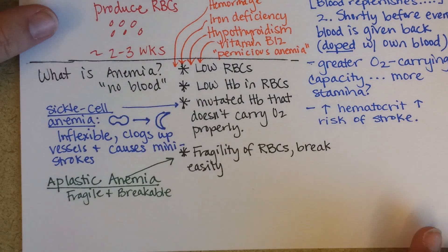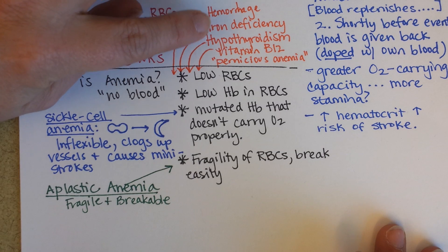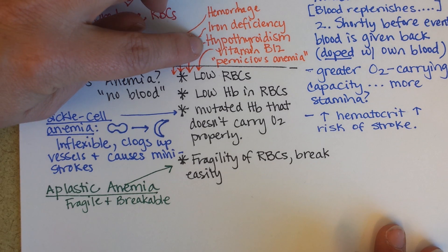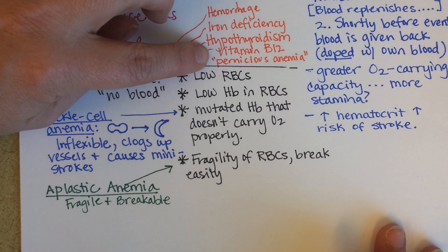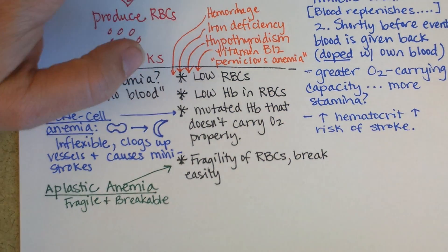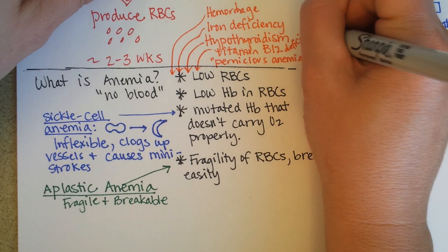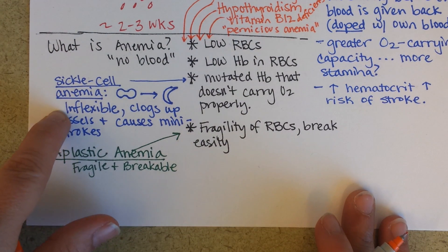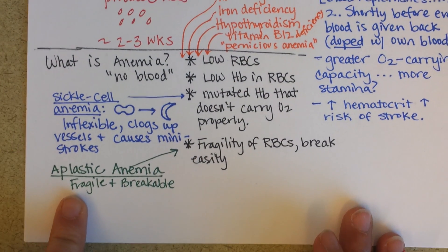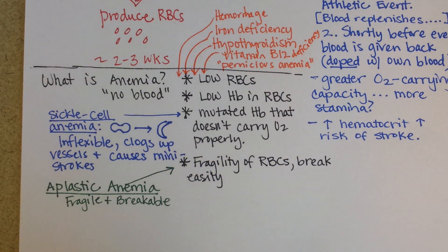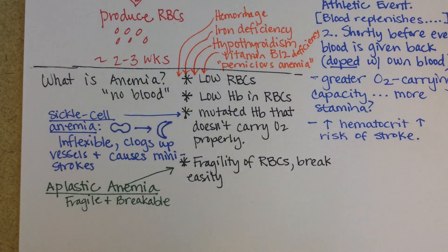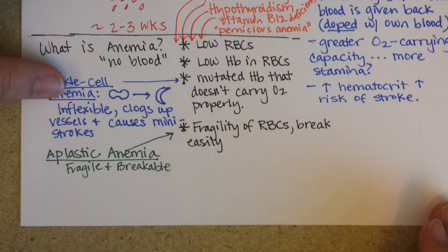To recap the causes of anemia: hemorrhage, iron deficiency, hypothyroidism, vitamin B12 deficiency, sickle cell anemia, and aplastic anemia. Other kinds of cancers like leukemia can also cause anemia, because they produce so many white blood cells that there aren't enough red blood cells in some cases.